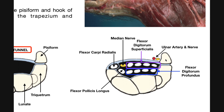Looking at the pisiform, we can see outside of the carpal tunnel — superficial to the carpal ligament — an artery and a nerve. These are the ulnar artery and ulnar nerve. They are on the medial or pinky side, and importantly they exist outside of the tunnel. These two structures traverse into the hand lateral to the pisiform bone through a little canal called the canal of Guyon. We'll look at that in a future video, but understand that the ulnar artery and nerve are outside of the carpal tunnel.